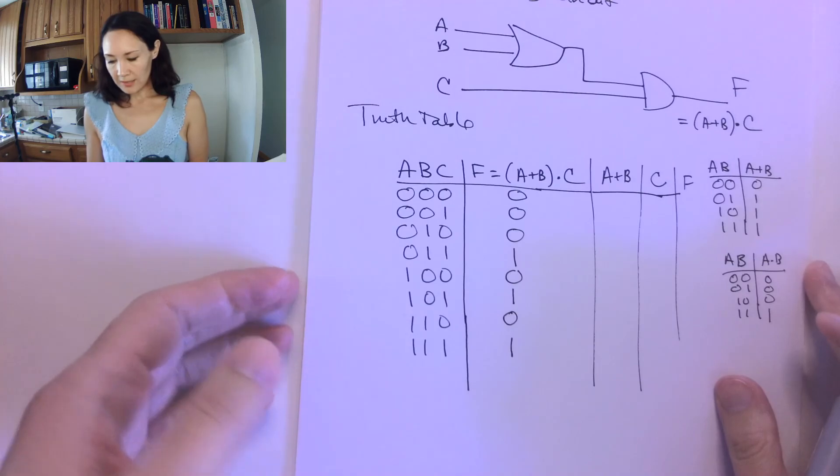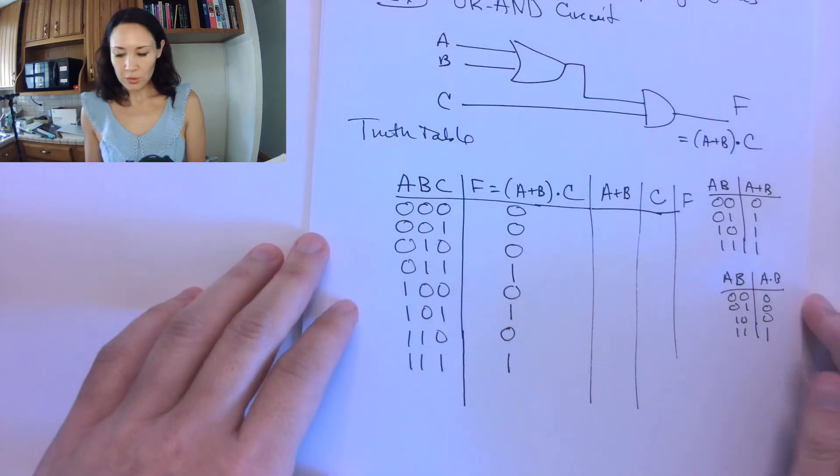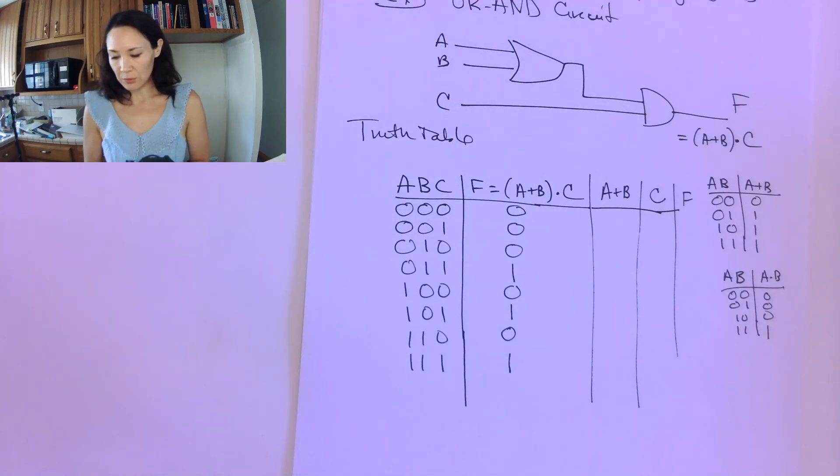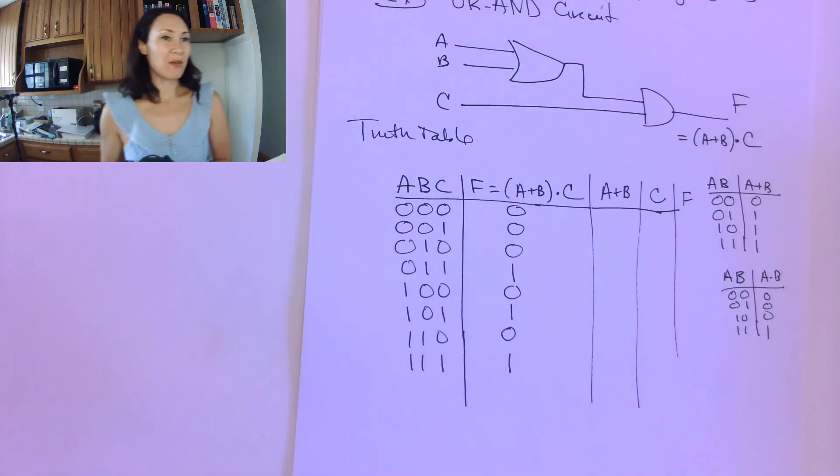I'll show you some more examples later of 2 and 3 stage circuits with ANDs and ORs, and also I'll show you what happens when we stick some inverters and buffers in there as well.